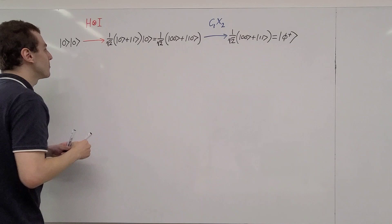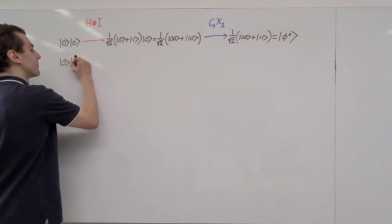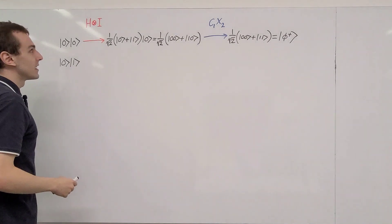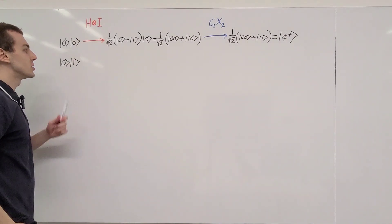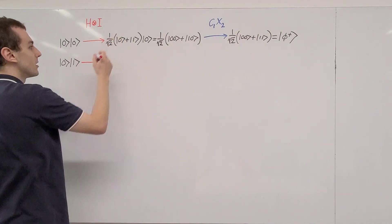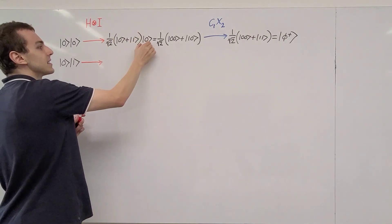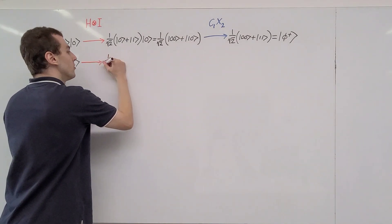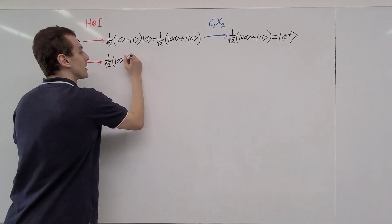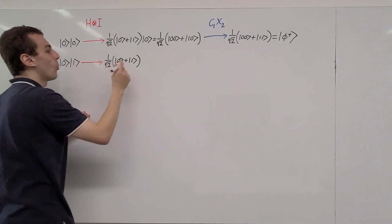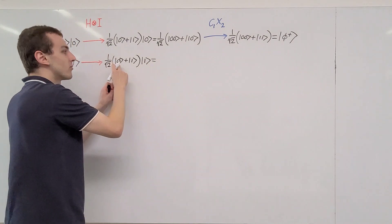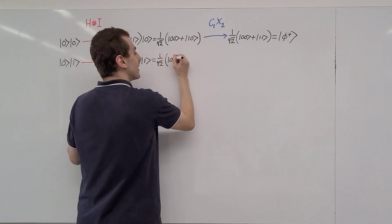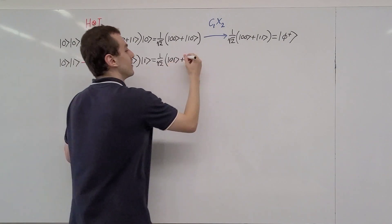Next, let's prepare the two-qubit system in the state |01⟩, initializing qubit one in state |0⟩ and qubit two in state |1⟩. The Hadamard tensor product with the identity is going to map the |0⟩ to 1/√2(|0⟩ + |1⟩), while the second qubit remains |1⟩. Performing the tensor product gives us 1/√2 times (|01⟩ + |11⟩).